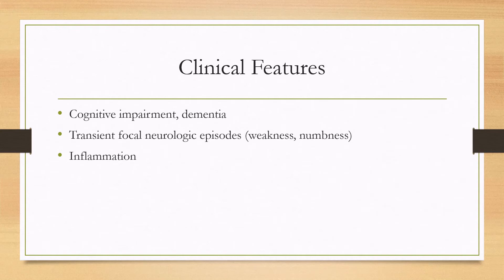There are some other clinical features that can be seen with amyloid angiopathy. These include cognitive impairment and dementia. There can also be transient focal neurologic episodes that can mimic either seizures or strokes, and there's also a type of inflammatory disease as well.